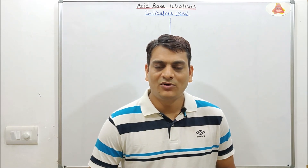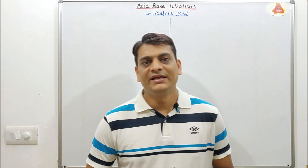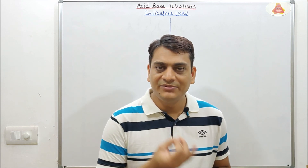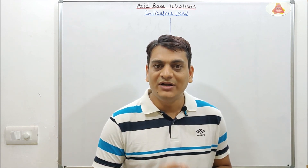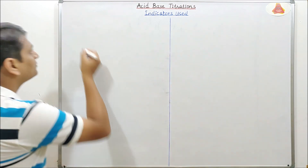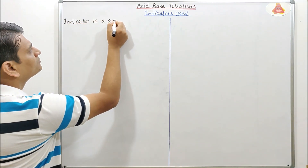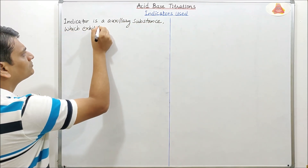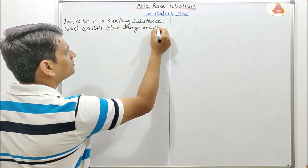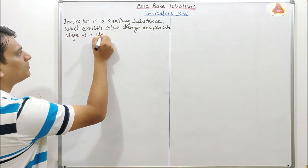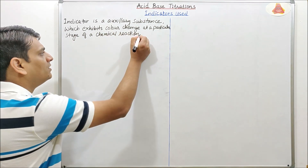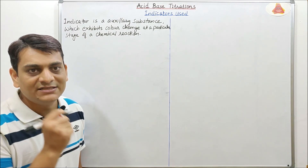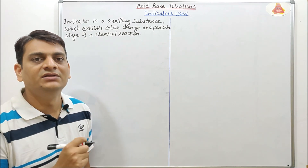Hello friends, today I am going to discuss about indicators used in acid-base titrations. So what is an indicator? An indicator is an auxiliary substance which exhibits color change at a particular stage of a chemical reaction. This indicator shows various colors at different pH levels, so we can easily determine the end point in acid-base titrations.